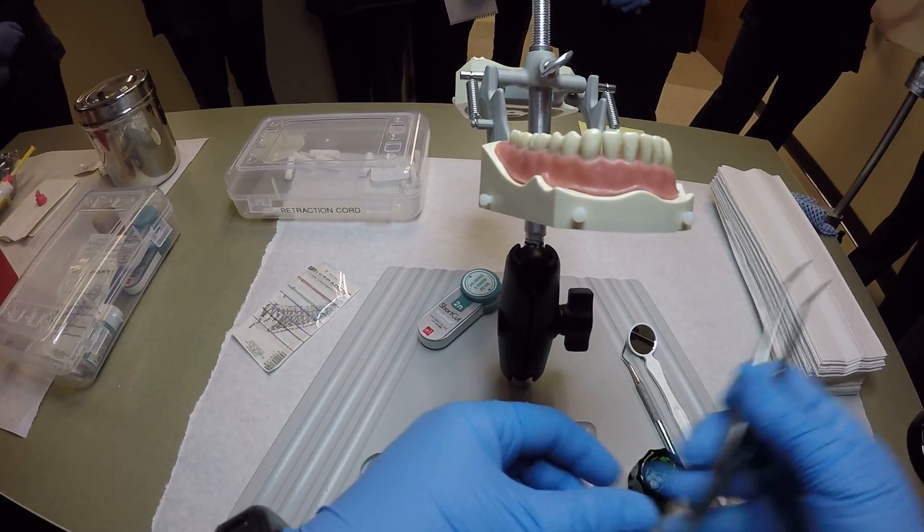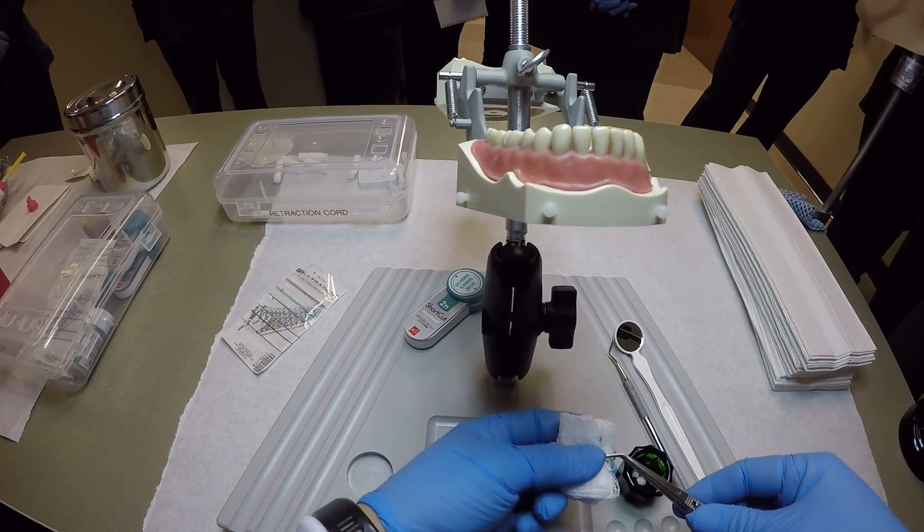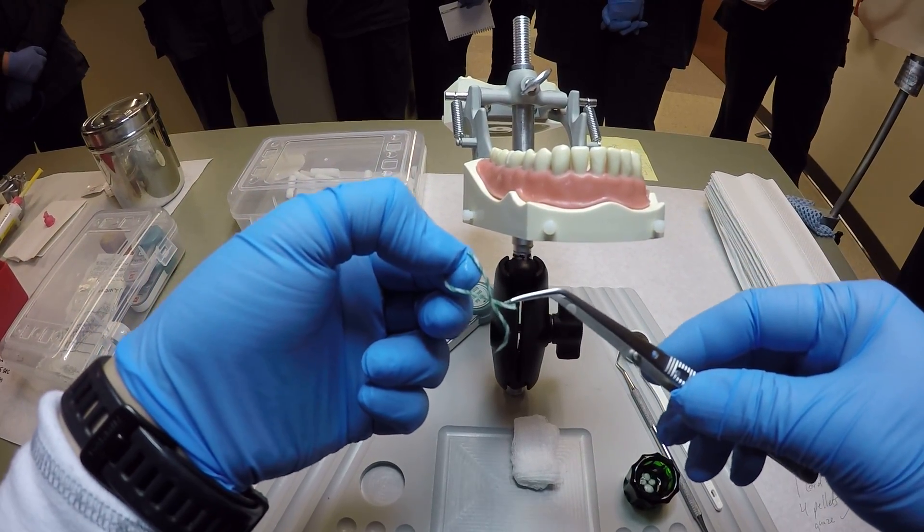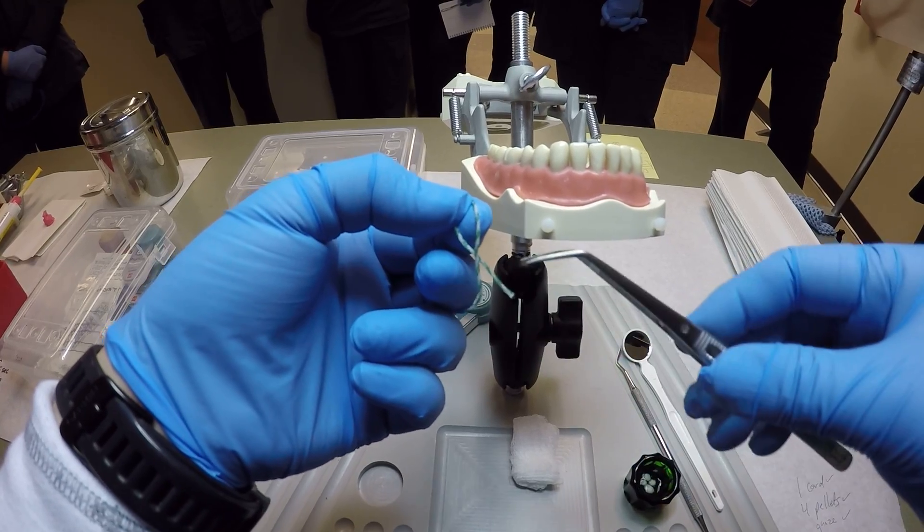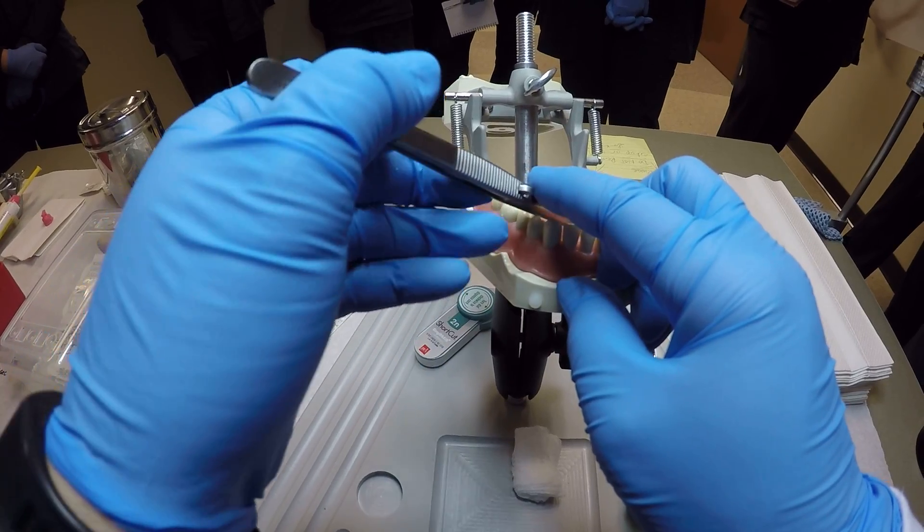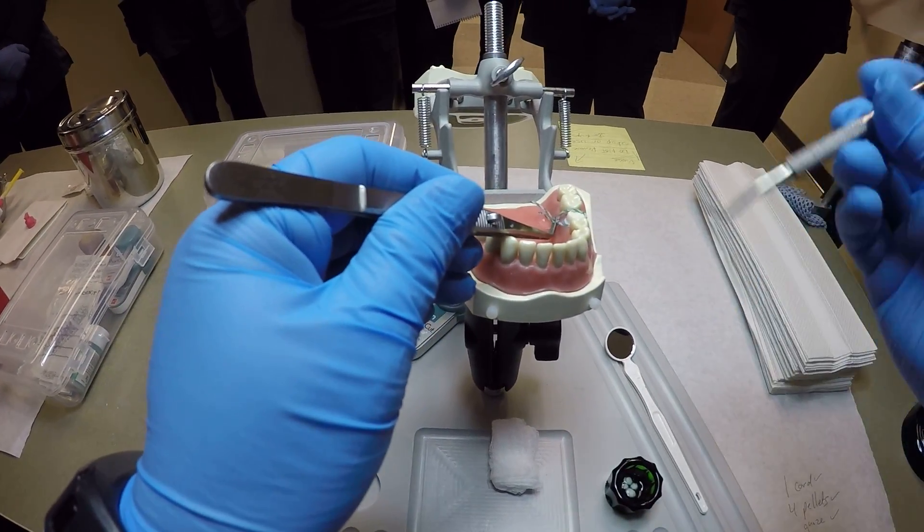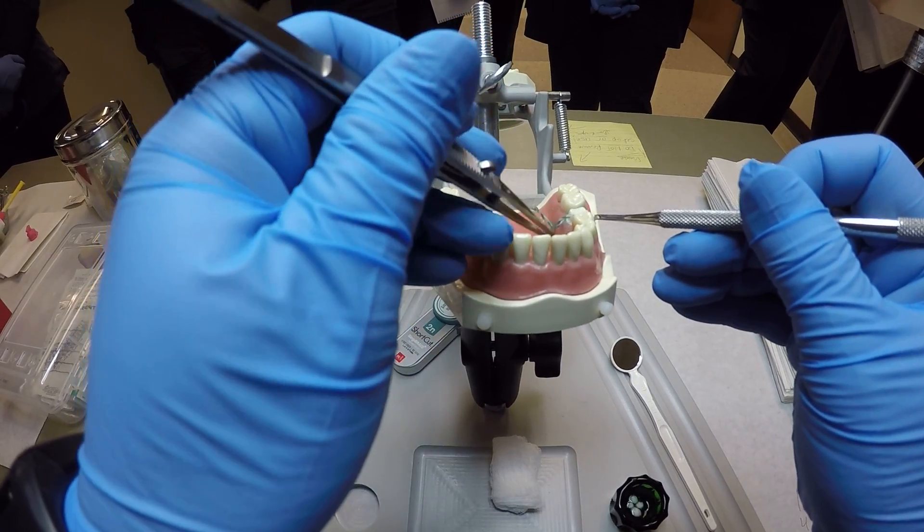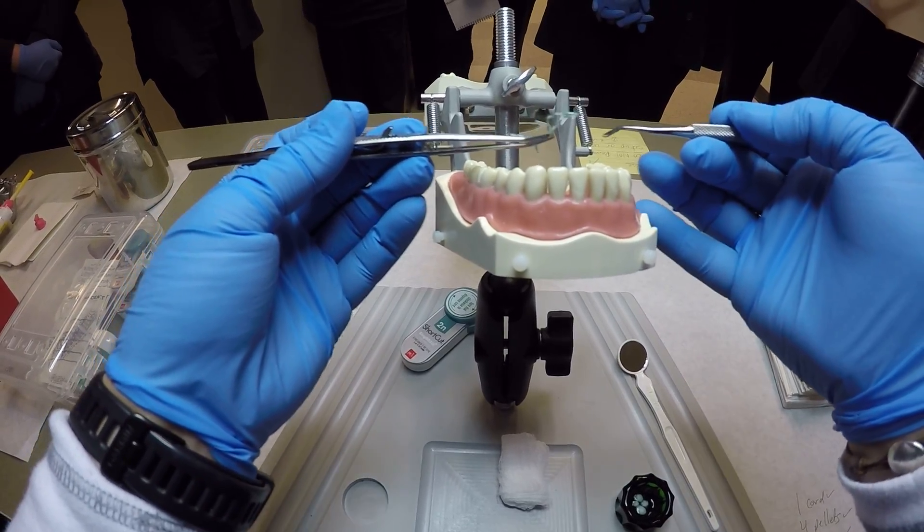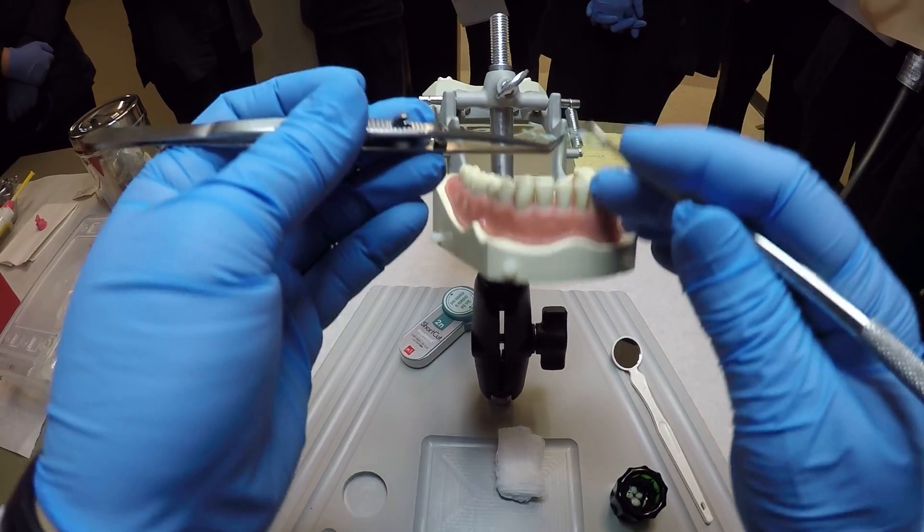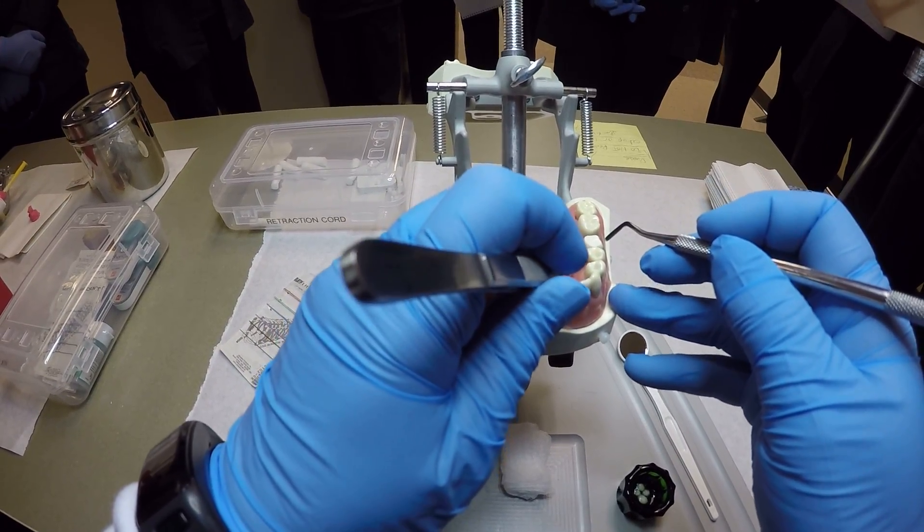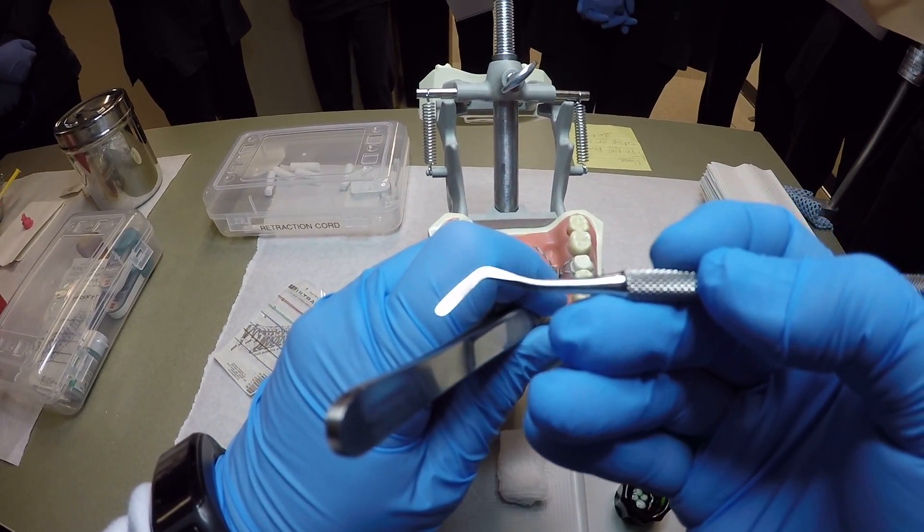Alright, so we take our retraction cord and use our cotton locking pliers. And we loop it over the tooth. This one we're going to be using is number 19. Notice that it's easier to do this but you can't because in reality the patient would have cheeks. So you have to train yourself to come in going this way. Pull down on it, your packing instrument.